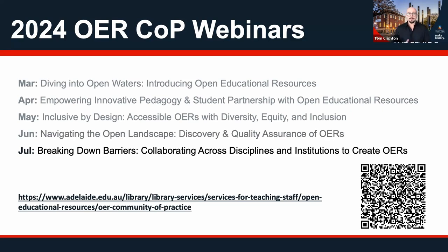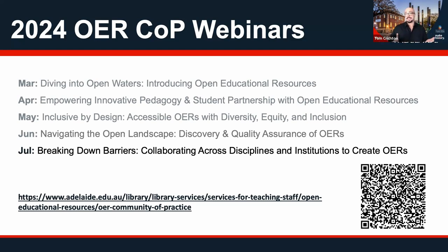In July, we'll look at how some institutions and academics are using Open Resources to collaborate across disciplines and across institutions. There's a lot of good work around the world with people collaborating across institutions to create common Open Educational Resources useful for all students within a particular discipline — for example, creating an open access resource for a core first-year subject that can be shared rather than recreating pockets of content around the place.